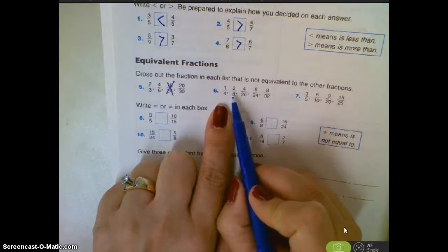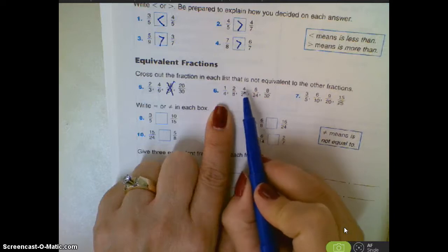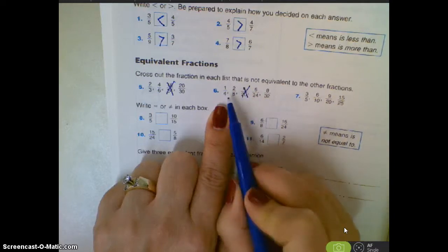On this one, one-fourth, two-eighths. I can just multiply them both by two. This one, four times five is 20. One times five would be five, so that must be it there, but we'll double-check.